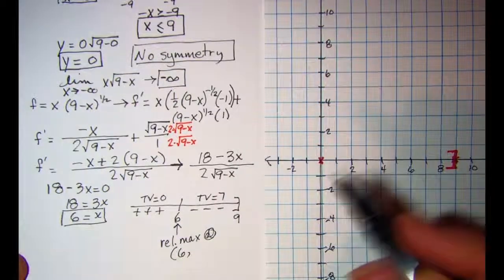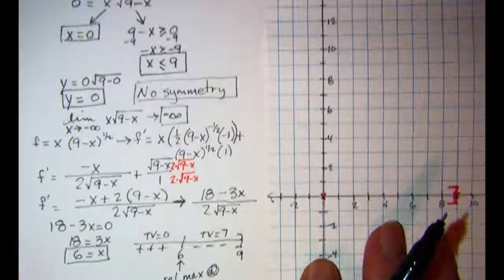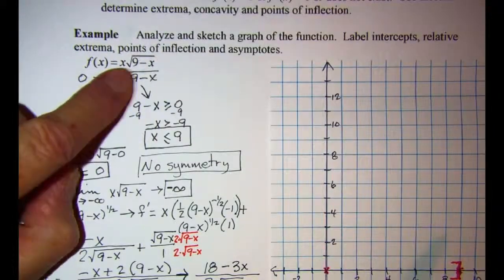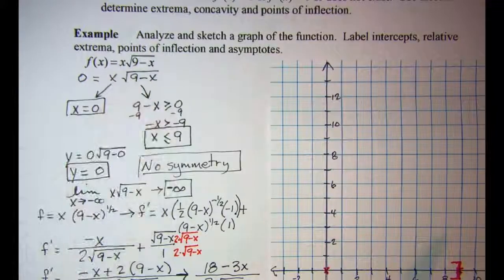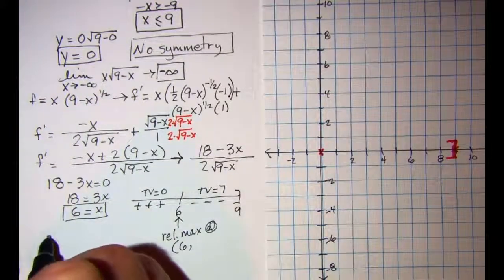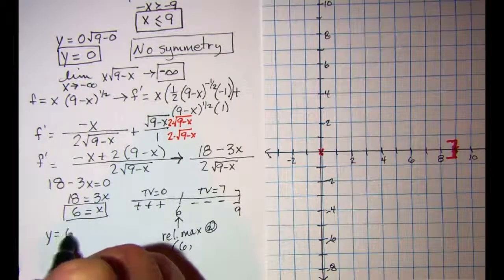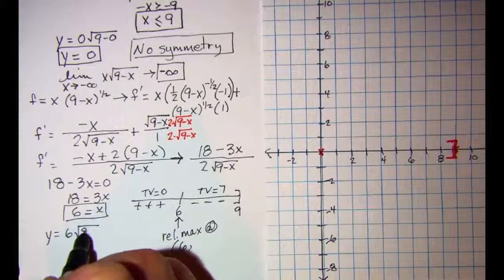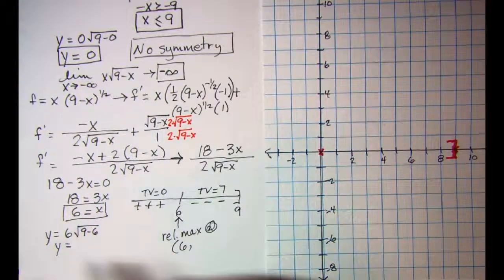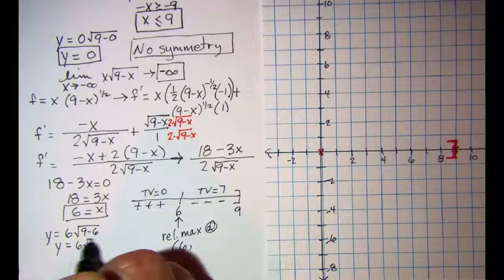And then if I put 6 into my function, 6 times the square root of (9 minus 6), looks like 6 times the square root of 3.